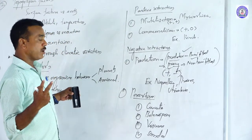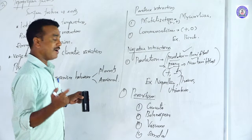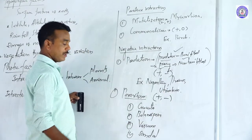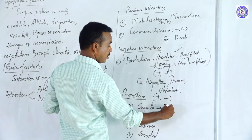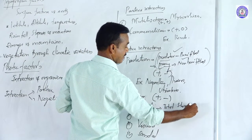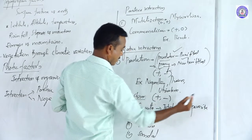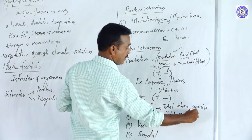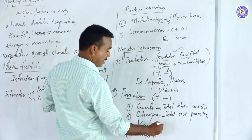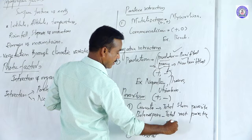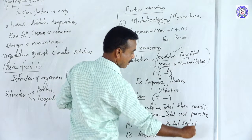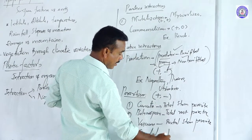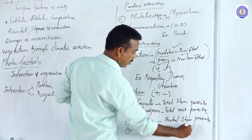Parasitism symbol is plus/minus — one organism benefits and the other is harmed. Cuscuta is a total stem parasite. Balanophora is a total root parasite. Viscum is a partial stem parasite. Santalum album (sandalwood) is called a partial root parasite.